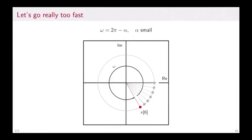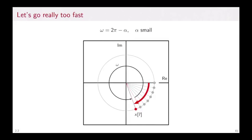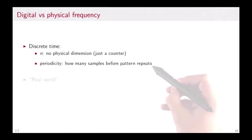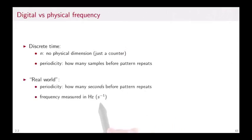Let's now think about the difference between digital and physical frequency. In discrete time, n has no physical dimension, it's just a counter, and periodicity is how many samples before the pattern repeats. In the real world, periodicity is how many seconds before the pattern repeats, and the frequency is measured in hertz, or second^(-1), which is one over the number of seconds until the pattern repeats.